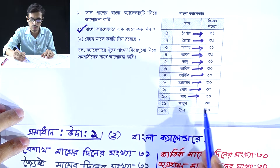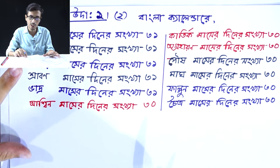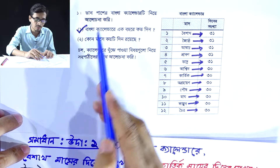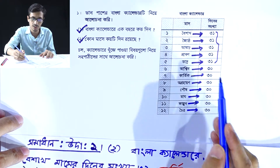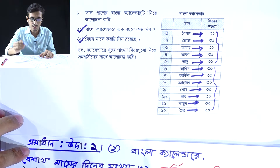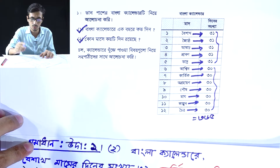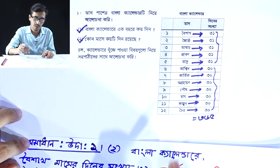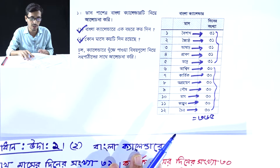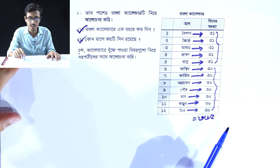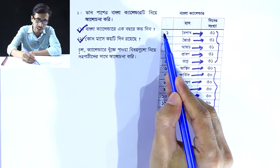Baishakh, Jyeshtha, Asharh, Shravan, Bhadra, Ashwin, Kartik, Agrahayan, Poush, Magh, Falgun, Chaitra — counting these months, we look at how many days each contains, and we find the total result here.